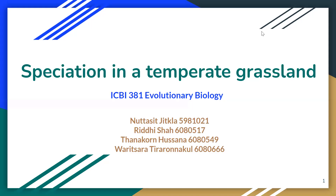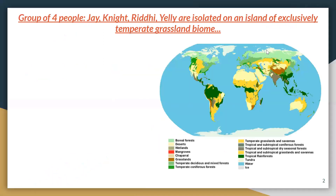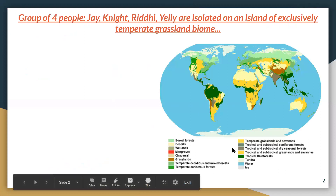Hey everyone, so today we are going to be presenting on speciation in the temperate grassland. We made this presentation in the context that our group of four people, which includes Jay, Knight, Yeli, and myself, are isolated on an island of exclusively temperate grassland biome, as you can see in the picture here.